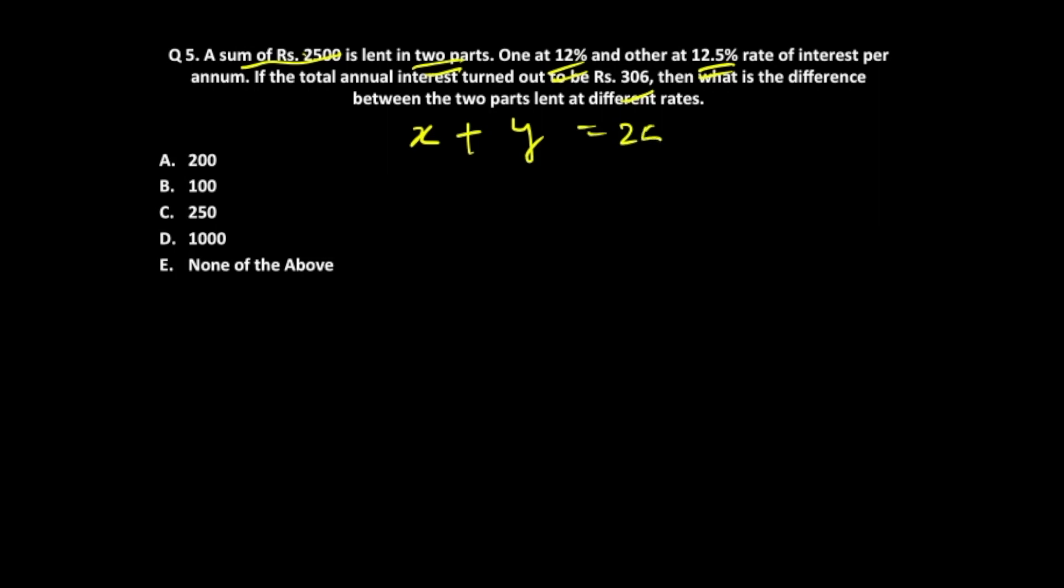I would request you not to follow that method. A better approach is: x is the first sum, 2500 - x is the other sum. One is invested at 12%, the other at 12.5%. Although it involves just one variable, you'll still have to solve for x.